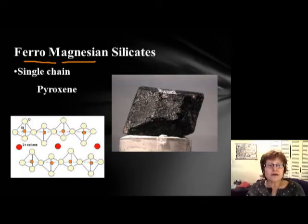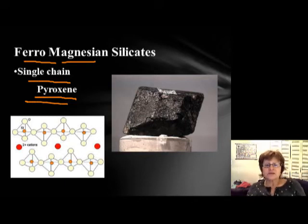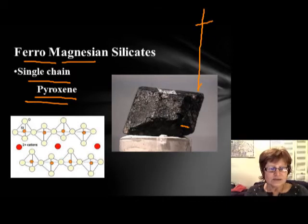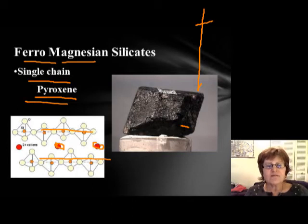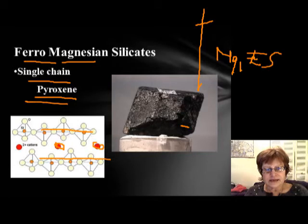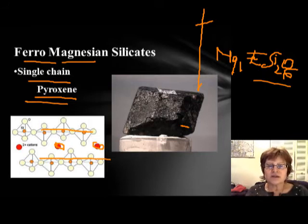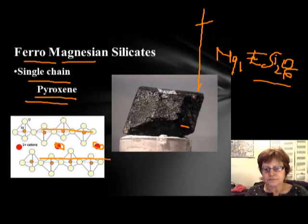The next group of ferro-magnesium silicates is the ones with single chain structure — the pyroxenes. Pyroxene is a group name containing more than one mineral, but knowing pyroxene is sufficient. They are most of the time dark colored and have a typical chain silicate structure inside. The formula is Si2O6, and one member is MgFe, with the cations fulfilling the four negative charges.